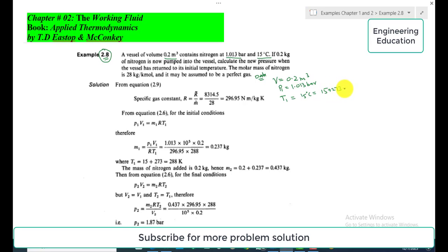If 0.2 kilogram of nitrogen is now pumped into the vessel, calculate the new pressure when the vessel has returned to its initial temperature. So we have given that if mass of 0.2 kg is added to the vessel, then we have to calculate the new pressure. This is the required parameter when the vessel has returned to its initial temperature.